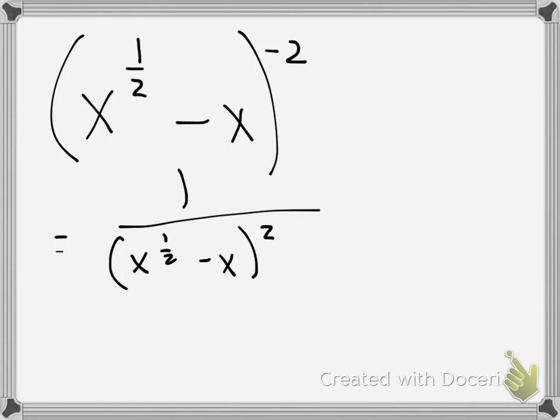Well, when we see a quantity squared like this, a binomial, that's basically telling me that I want to FOIL x to the 1 half minus x times itself. Okay, so we'll do our first term, x to the 1 half times x to the 1 half is x to the 1, because we add the exponents.